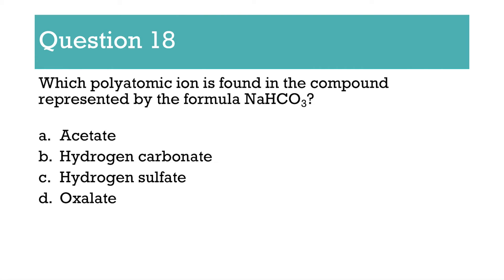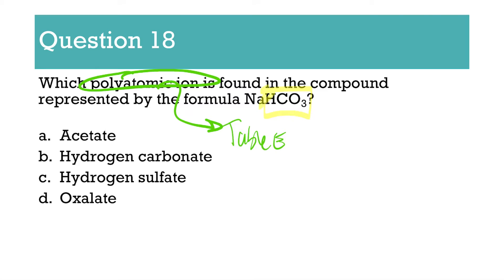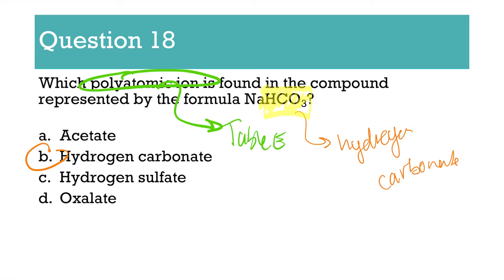Number 18: which polyatomic ion is found in the compound NaHCO3? If we're talking about polyatomic ions, go to table E. What part of that compound matches exactly on table E? HCO3 matches — it is named bicarbonate. Therefore the answer is B. That comes straight off table E. Do not guess — that's a silly question to get wrong because it's right in front of you.